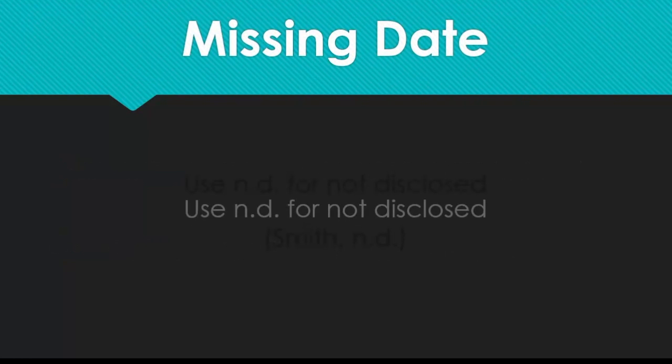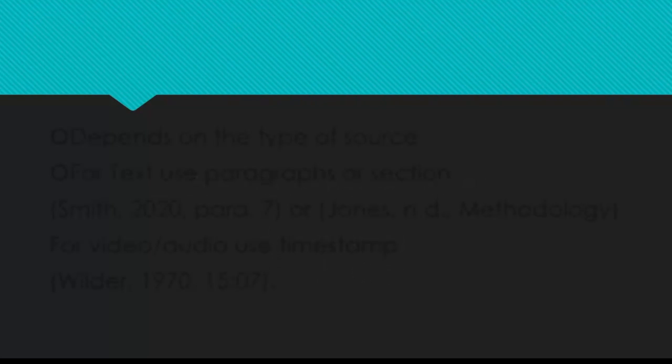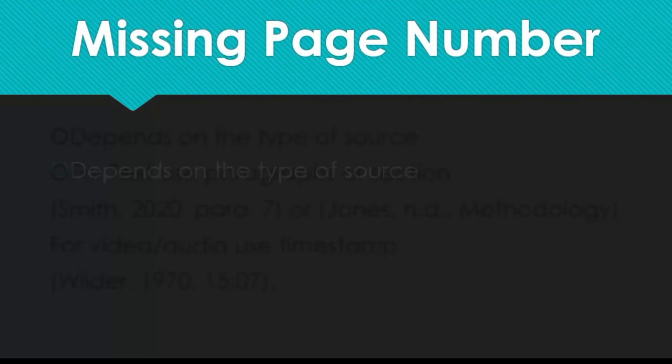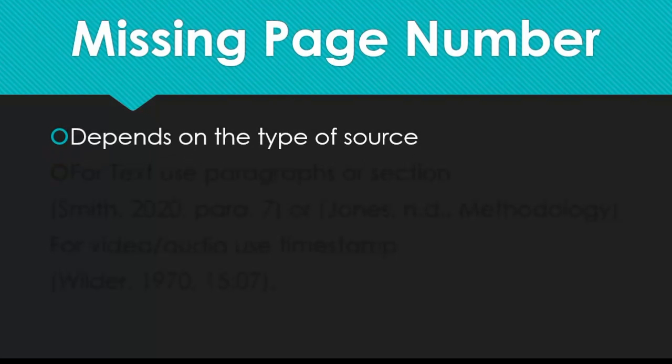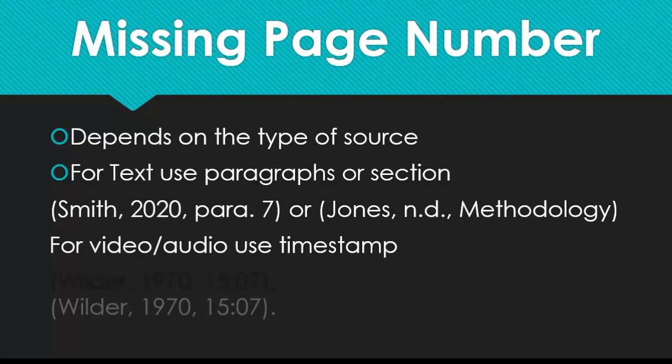If you're missing a publication year, you can replace that piece with n.d. for not disclosed. If you're missing a page number on a text document, you can either include a paragraph count or a section name where that quote can be found. If it's another type of source, like an audio or video file, you can include the timestamp.